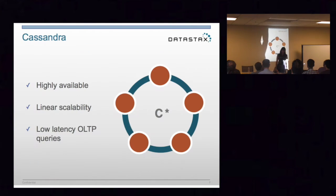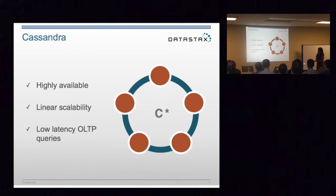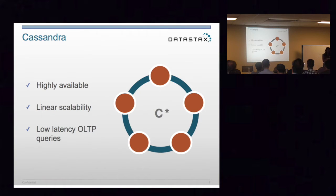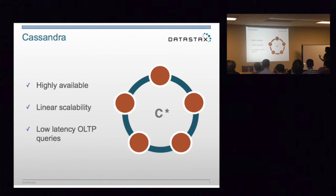Luckily, we have something that can be friends with Solr, and that's Cassandra. Cassandra, for those who don't use it, is a highly available, linear scalable, OLTP system. I want to focus on the fact that it's an OLTP system because it's different from my experience coming into working with Cassandra. This is for low-latency queries — very short bits of information back and forth. But what is wonderful about Cassandra is that it's always on. It's highly available and scalable.